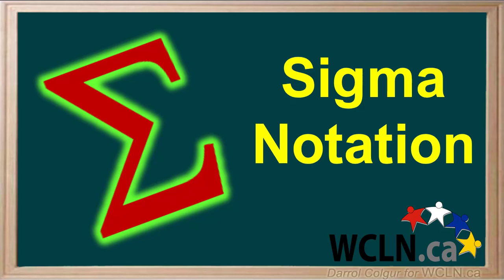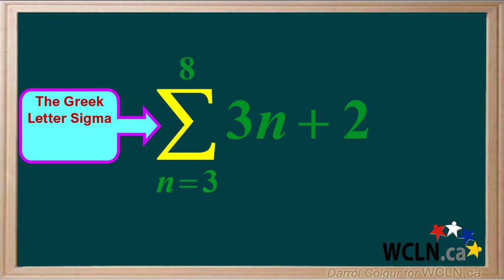Sigma notation is a compact and convenient way to represent an arithmetic or geometric series. We'll look at an example and explain what each part means. The big yellow symbol is the Greek letter sigma. It means the sum or summation.